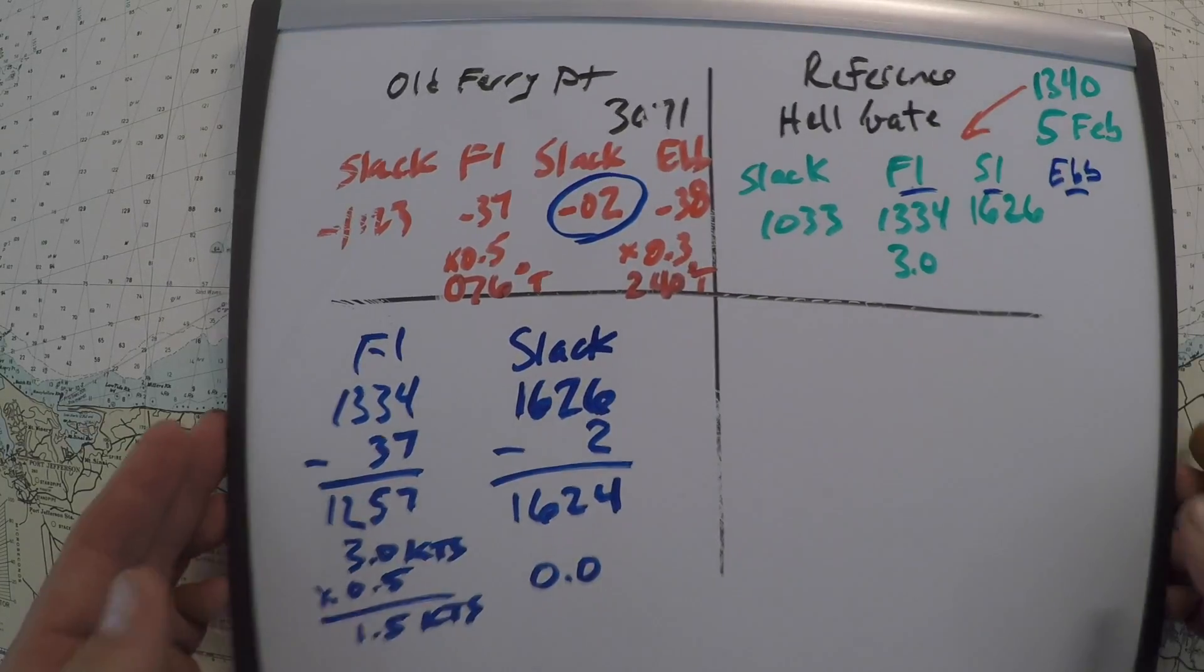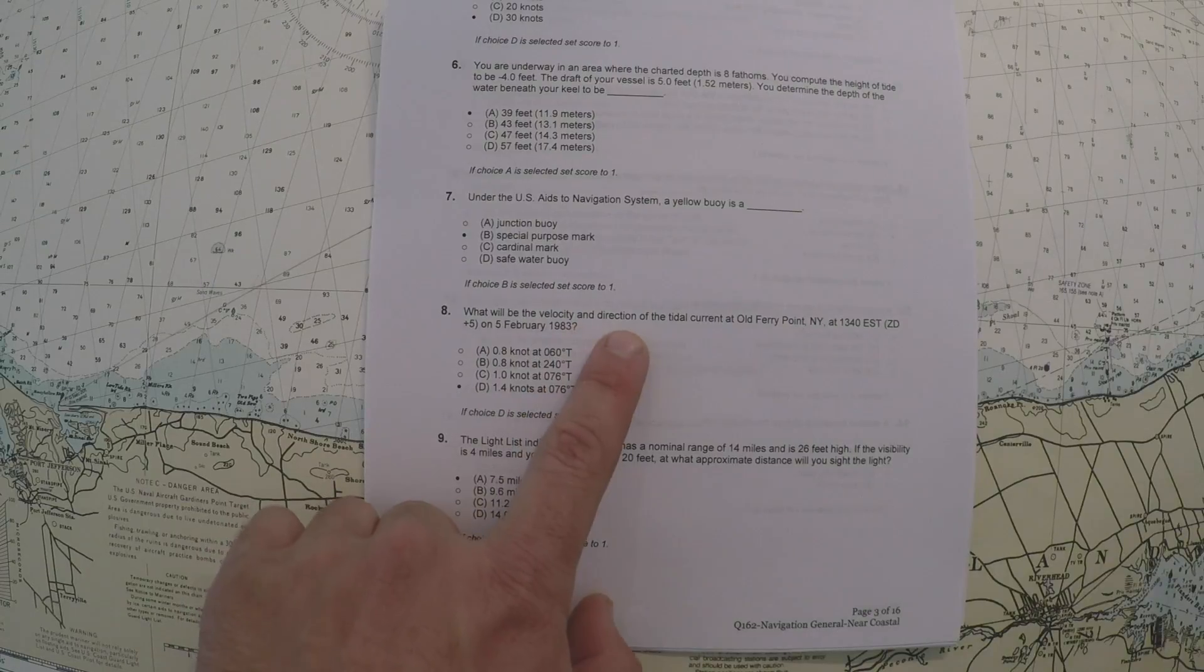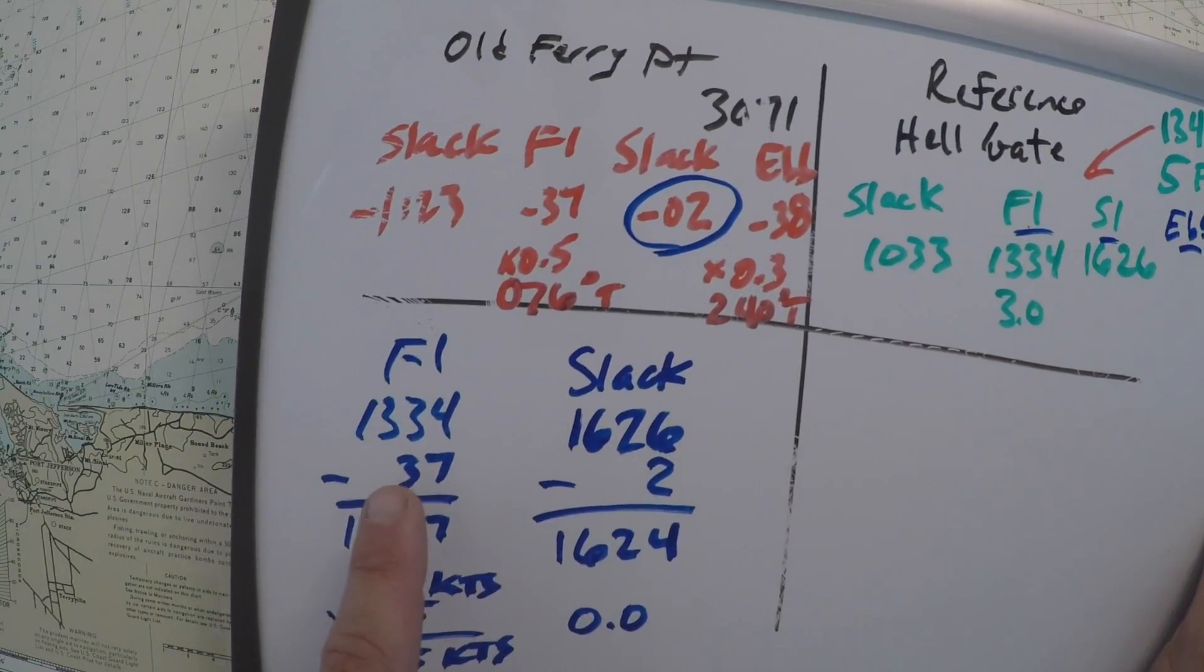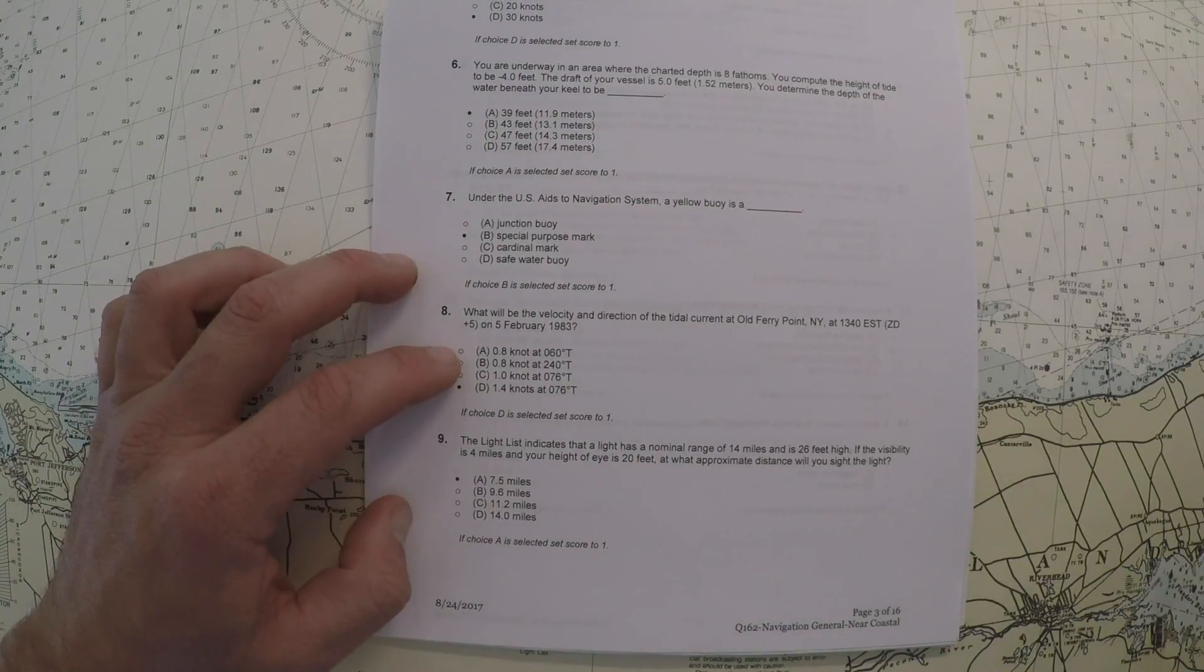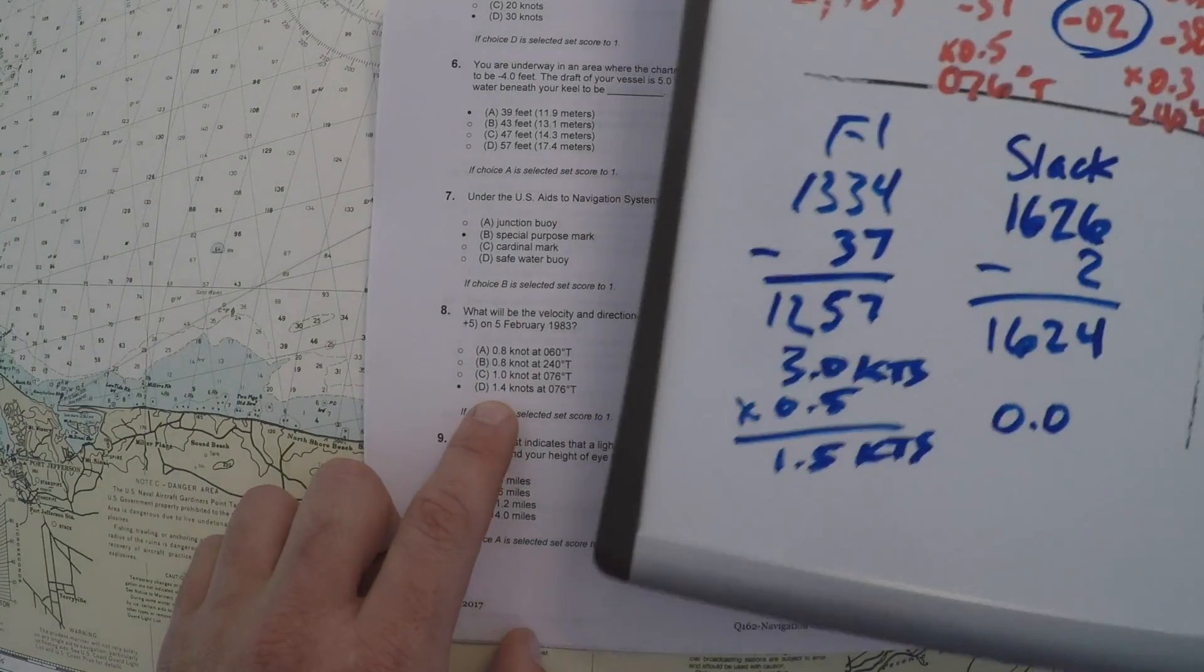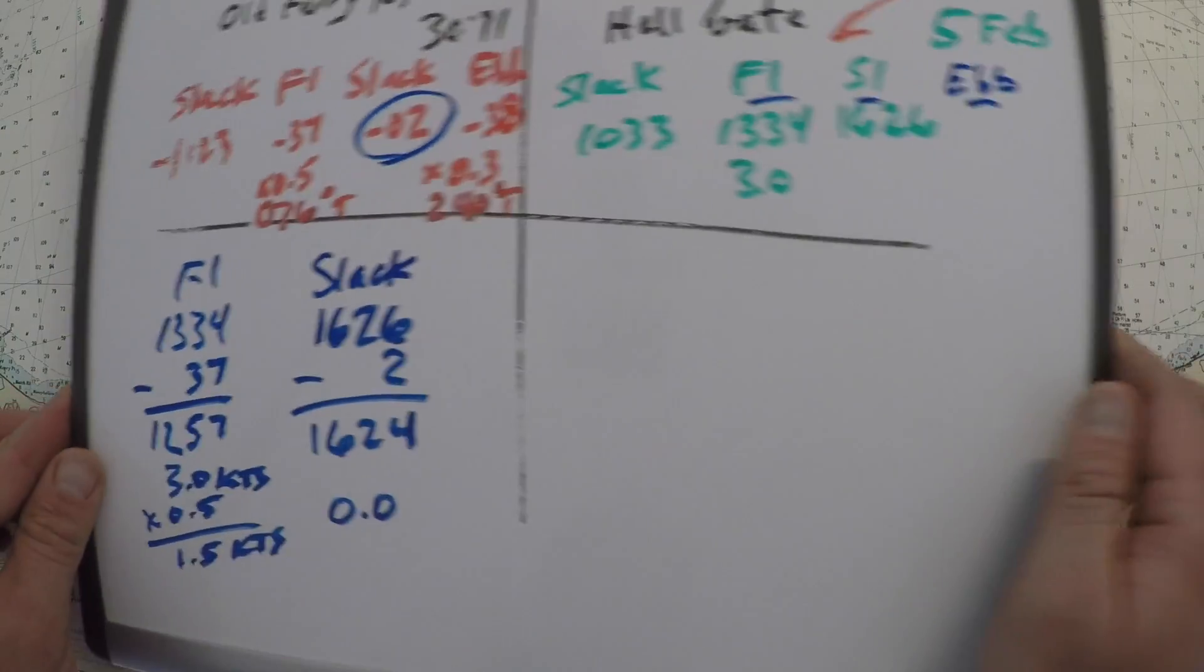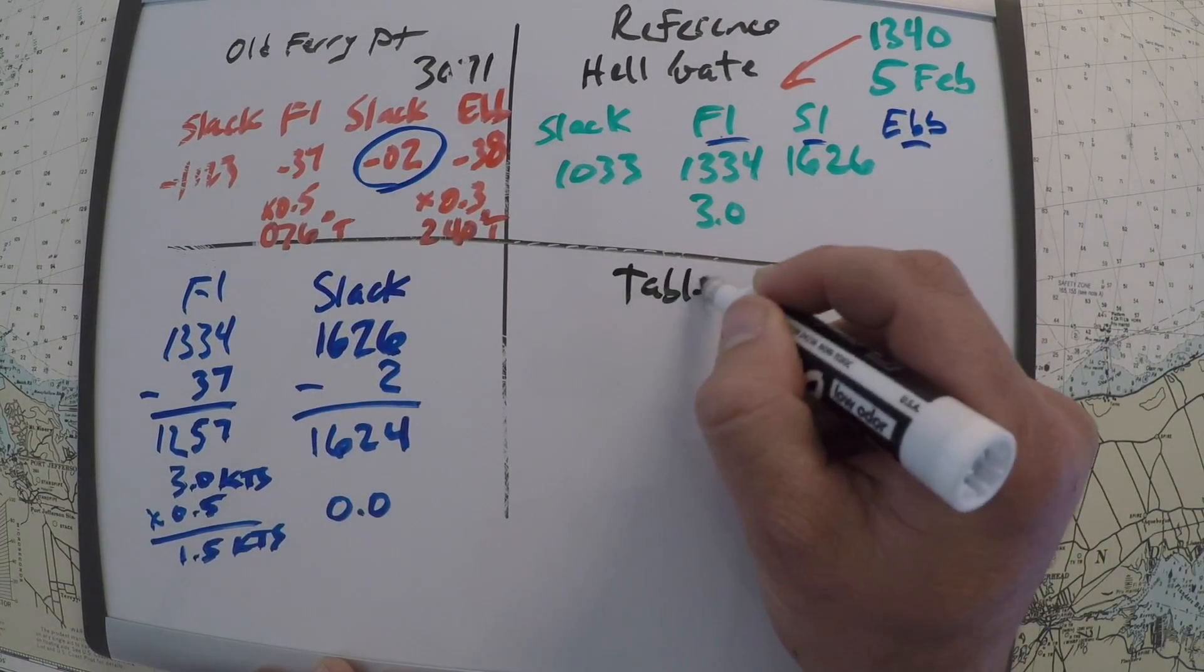So just a quick note, if you look back on the problem, it says what will be the velocity and direction of the tidal current? Two of our answers have a direction of 076. So we know we're pretty close to the flood time, which is a direction of 076. So you could even just get rid of choice A and B, and if you had to guess, you could guess. So is it going to be 1.4 knots or is it going to be 1.0 knots? So our max flood is 1.5, and now we'll use table 3 over here to determine the exact value.